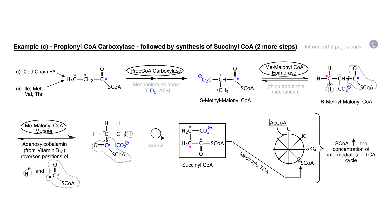Succinyl-CoA then feeds directly into the TCA cycle — this is an anaplerotic reaction that increases the volume of carbon rotating in the TCA cycle. Overall, by way of review: the three-carbon compound propionyl-CoA, via the carboxylase reaction, is converted to the four-carbon branched molecule S-methylmalonyl-CoA. Its epimerization forms R-methylmalonyl-CoA, the substrate for methylmalonyl-CoA mutase, a vitamin B12 enzyme. This enzyme catalyzes a free-radical-mediated rearrangement in which one hydrogen and one coenzyme A functionality switch positions, linearizing the molecule to form succinyl-CoA, which then flows into the TCA cycle.